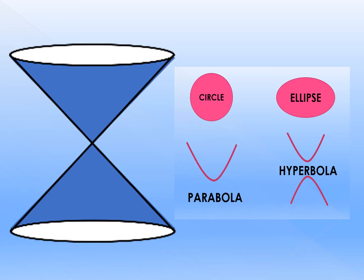And the last question: if you cut a double nappe cone and it passes through the vertex, do you think you can form the same conic sections? So now let's check your answers.